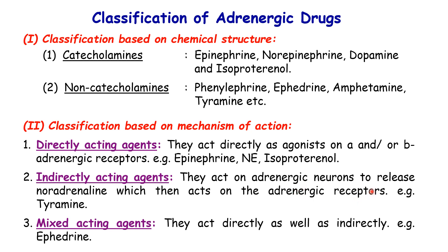When indirect-acting drugs bind to receptors on the adrenergic neurons, they stimulate those neurons to release norepinephrine or noradrenaline into the synapse, which then acts on the adrenergic receptors — either alpha or beta. An example of an indirectly-acting agent is tyramine. We also have mixed-acting agents, such as ephedrine, which can act either directly as an agonist or indirectly by stimulating neurons to release norepinephrine.